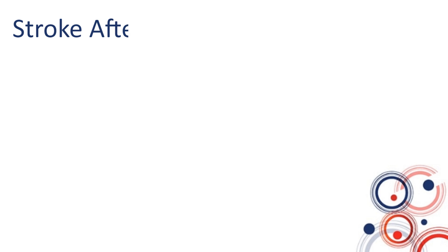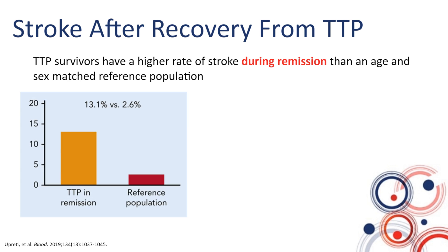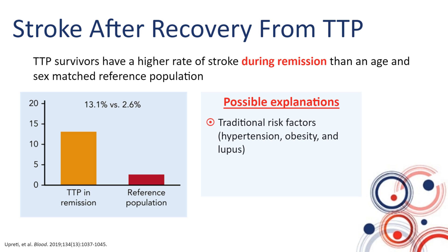A recent study found that TTP survivors have a higher rate of stroke occurring during TTP remission than expected from age- and sex-matched controls. This does not include strokes during TTP episodes, and all events occurred when patients had normal platelet counts. The rate of stroke in TTP patients in remission was 13% versus an expected rate of 2.6% from the general population. There are multiple possible explanations, including a higher rate of traditional risk factors such as hypertension, lupus, and obesity.